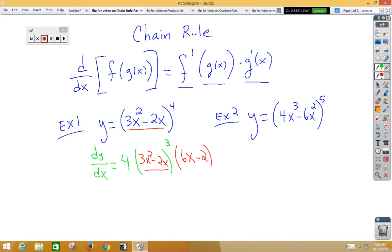In example 2, dy dx is equal to the outside function would be x to the fifth power. So the derivative of x to the fifth would be 5x to the fourth. Don't change the inside, so 4x cubed minus 6x squared. And then we're going to multiply by the derivative of the inside. In this case, that would be 12x squared minus 12x.